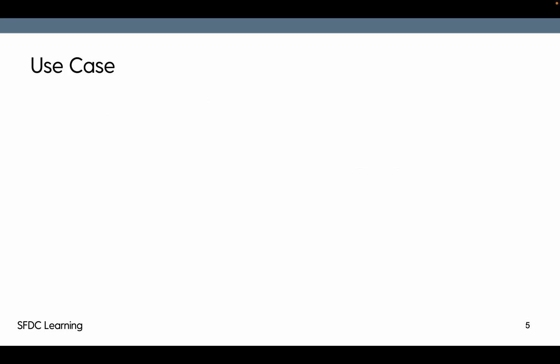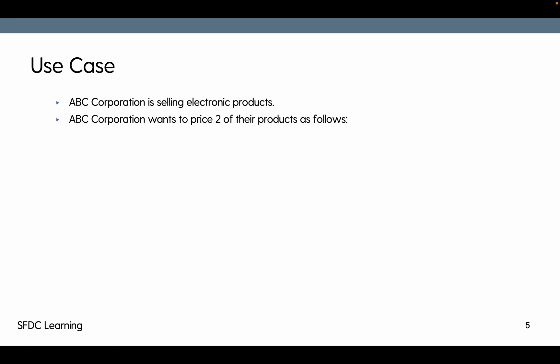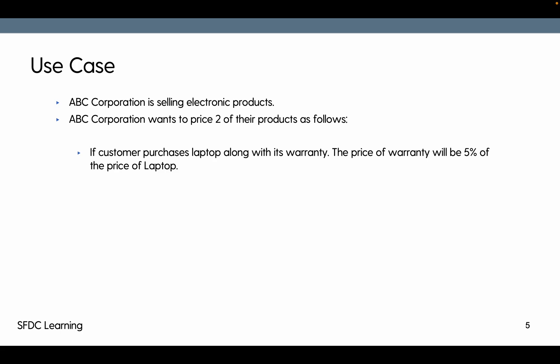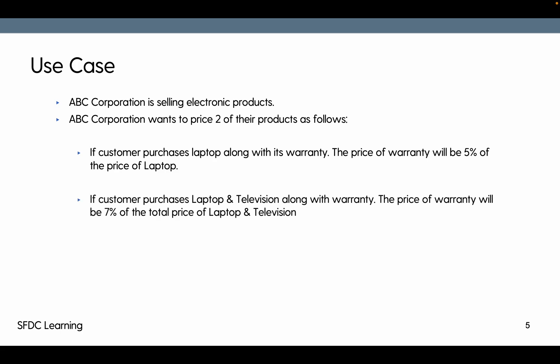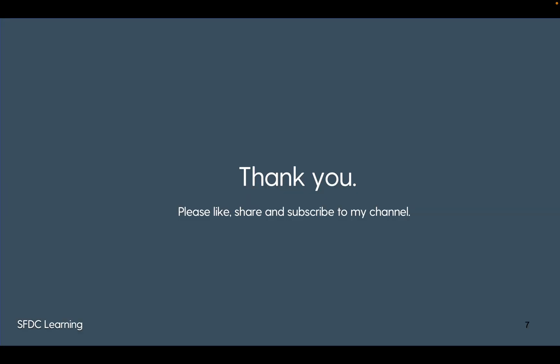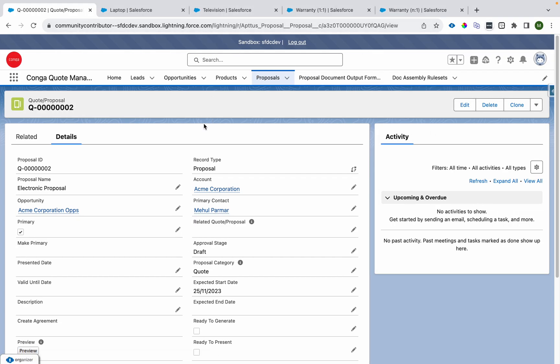Now the use case: ABC Corporation sells electronic products. Use case one — if a customer purchases a laptop along with its warranty, the price of the warranty will be 5% of the price of the laptop. Use case two — if the customer purchases a laptop and a television along with warranty, the price of warranty will be 7% of the total price of laptop and television. The first is one-to-one, the second is many-to-one.